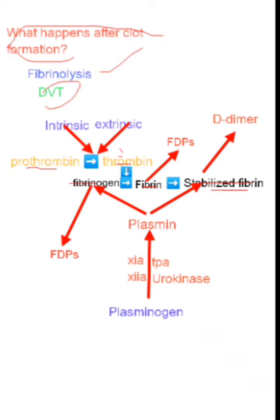This process takes a few days. The stabilized fibrin, along with fibrin and fibrinogen, must then be degraded so that excessive clot growth doesn't lead to deep vein thrombosis or DVT. This is the work of plasmin. Plasmin degrades stabilized fibrin into D-dimer, fibrin into fibrin degradation products, and fibrinogen into fibrin degradation products.